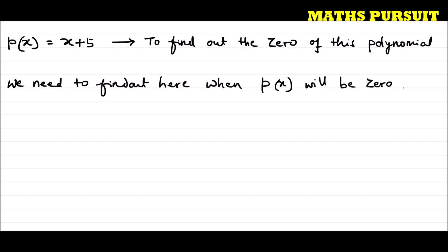Now let's see, when p(x) will be zero means that is x + 5 = 0. Let us assume x + 5 = 0. So then we can find out the value of x, or I can write x = 0 - 5.